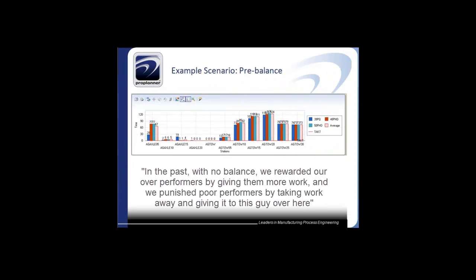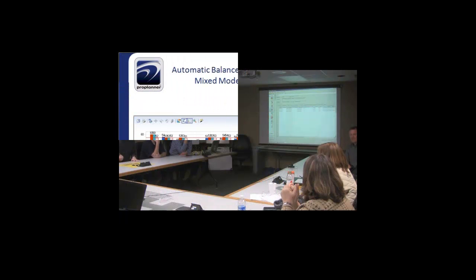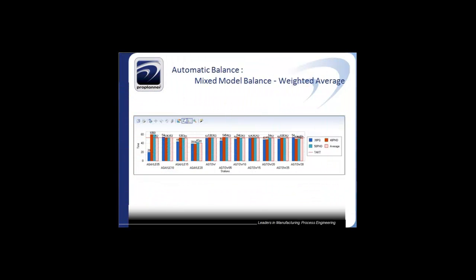With no balance, what we did was we rewarded our over-performers by giving them more work because they were always done with the task at hand. Then we punished our poor performers by taking some of that work away and giving it to someone else who was getting the job done.